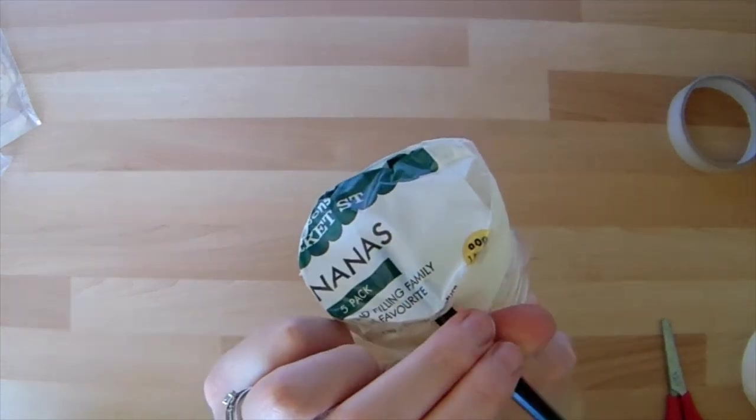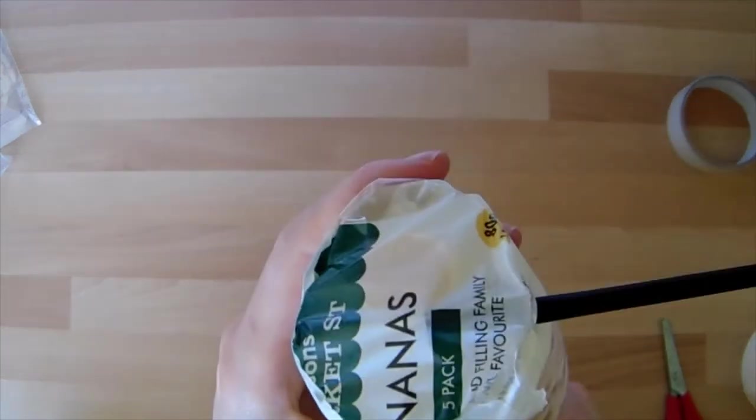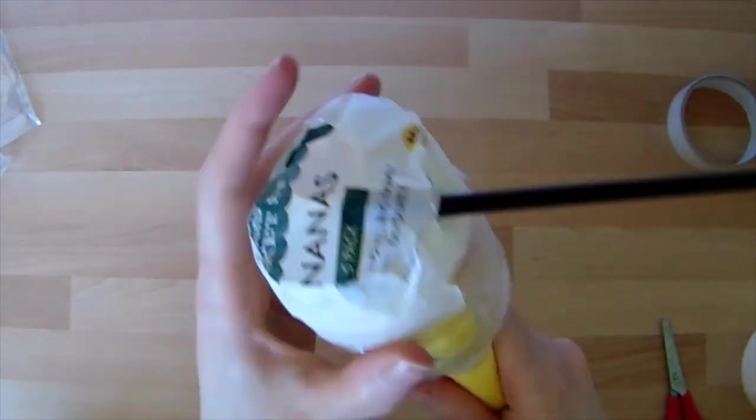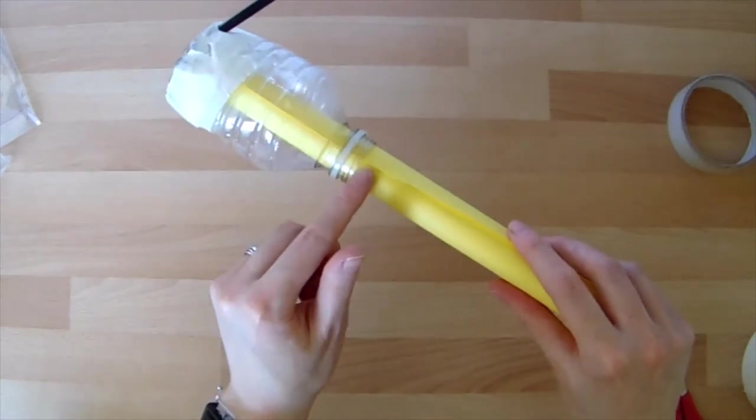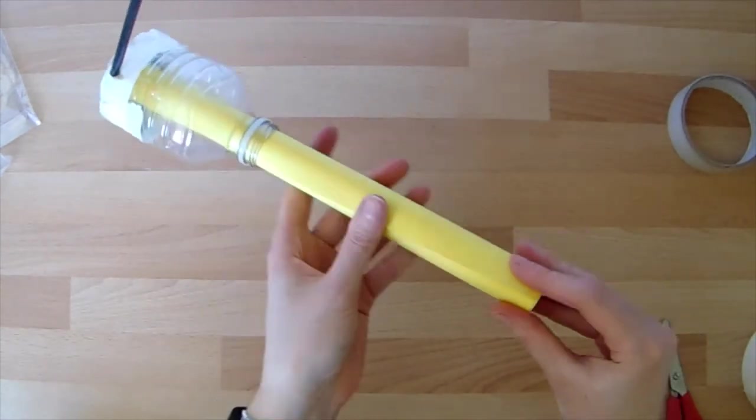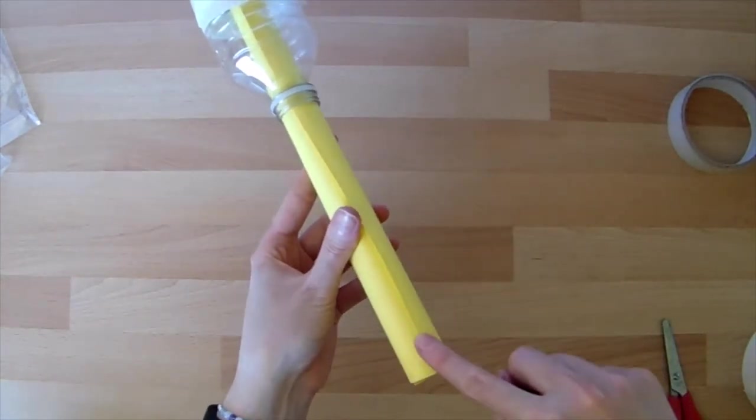Now if you let go, it might unroll slightly, but that's good. That means it's going to be nice and tight inside that bottle, and we can put some tape all the way along that line.